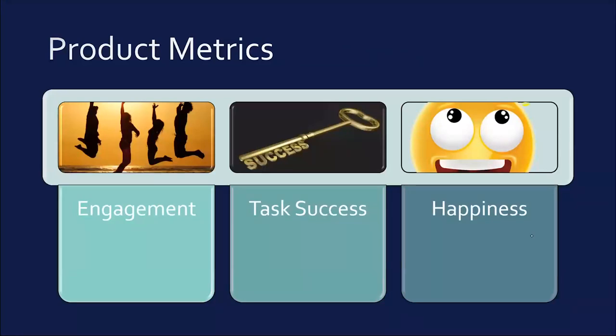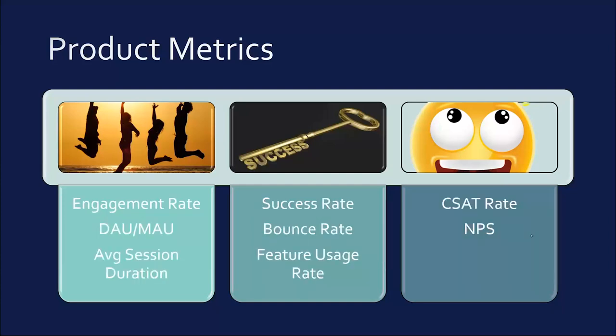Similarly, product metrics, where product manager closely pay attention to the usage by customers, how well they are able to complete those core actions without any friction, or simply measuring the satisfaction rate. Some of the examples of engagement categories are daily active users, monthly active users, tracking engagement rate, average session duration.